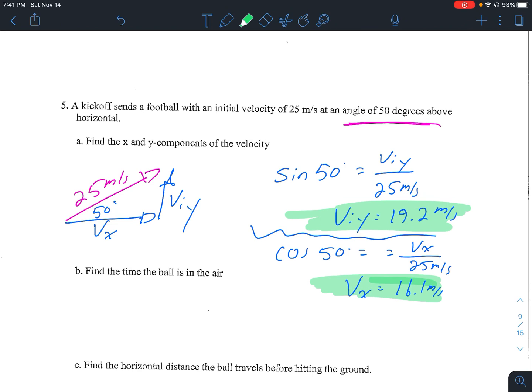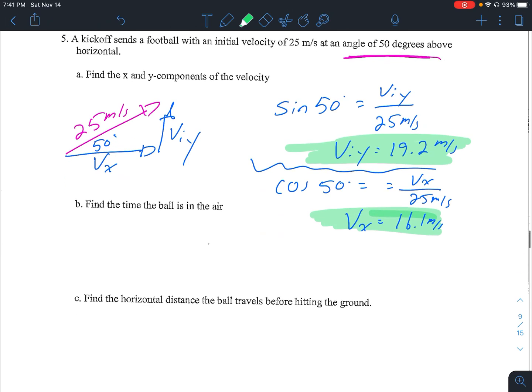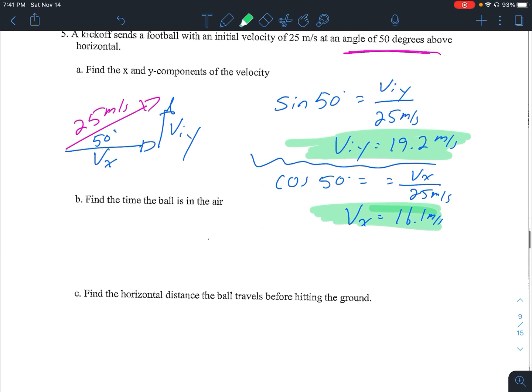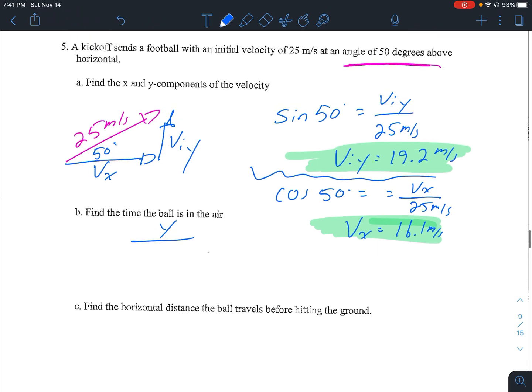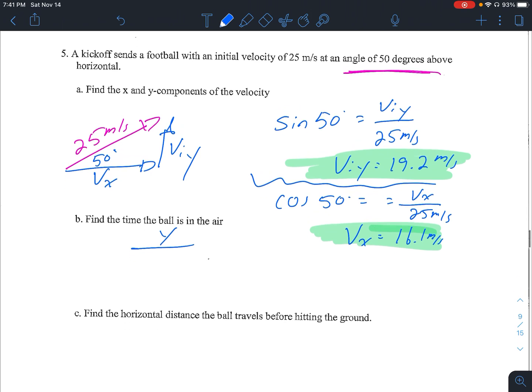And we're looking for, this is setting it up for you. So right now we're looking at the y direction information because we're looking to see how long the ball is in the air for. And it's basically like if you just throw the ball up at our 19.2 meters per second, how long is it going to take to go up and come back down?